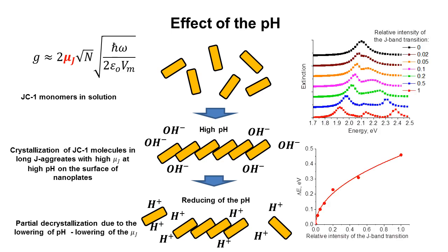We calculated how the intensity of the J-band transition will affect the energy of the Rabi splitting, and found that the observed two times reduction of the splitting energy corresponds to the two-fold reduction of the transition dipole moment.